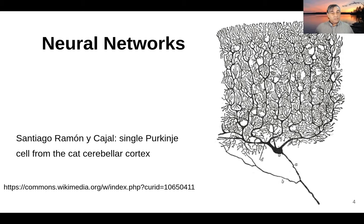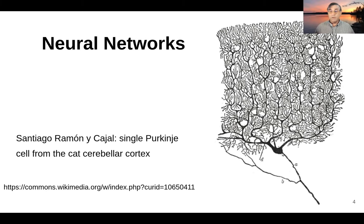And once enough input — enough positive input — arrives at that cell body, the neuron will produce an output. That output flows downwards down the axon and provides input to additional neurons.